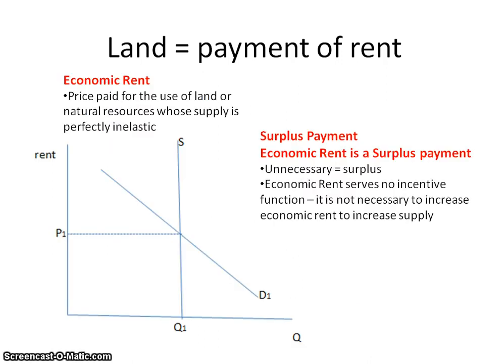When we're talking about land, there are two terms that you need to understand. One is economic rent, and the other one is surplus payment. Economic rent is the price paid for the use of land or natural resources whose supply is perfectly inelastic. The supply of land is perfectly inelastic because it is virtually fixed in the quantity available. The demand for land is the active determinant of economic rent. As demand increases or decreases, economic rent will increase or decrease given the perfectly inelastic supply of land.